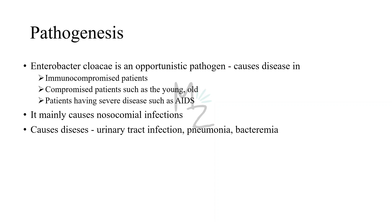Pathogenesis: Enterobacter cloacae is an opportunistic pathogen, meaning it causes disease whenever it finds an opportunity. It causes disease in immunocompromised patients, such as those with AIDS. It mainly causes nosocomial infections, including urinary tract infections, pneumonia, and bacteremia.